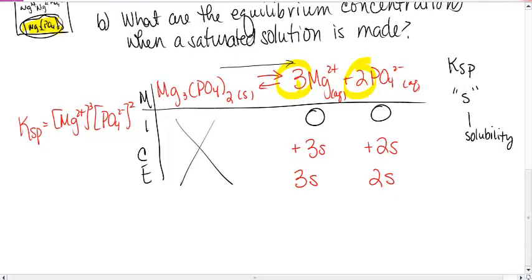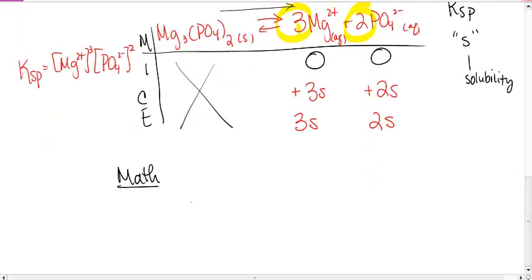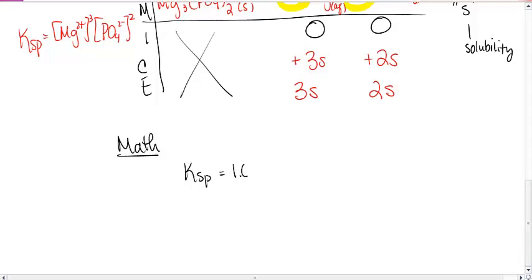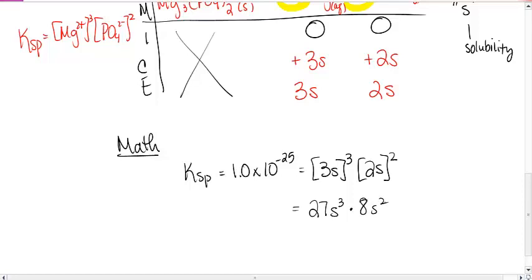All right, that's my ice table. Last step, do the math. So if I'm going to do the math, I'm going to plug it back into my KSP. So my KSP is, what is it? 1 times 10 to the minus 25 is equal to the concentration of magnesium cubed times the concentration of phosphate squared. So, let's see here. That's 27S cubed times 8S squared.